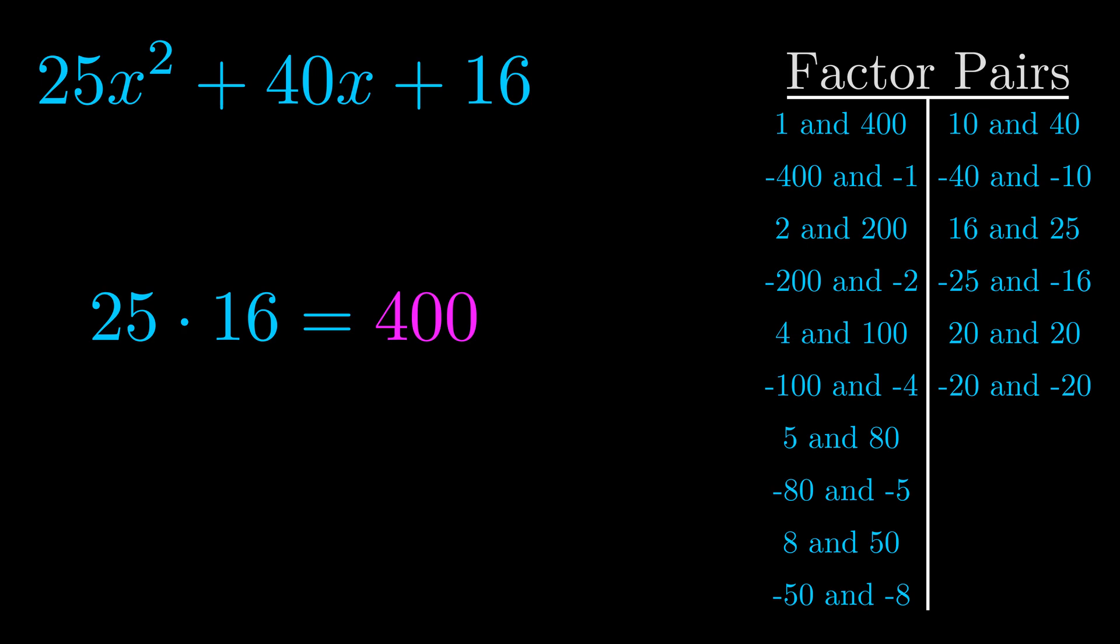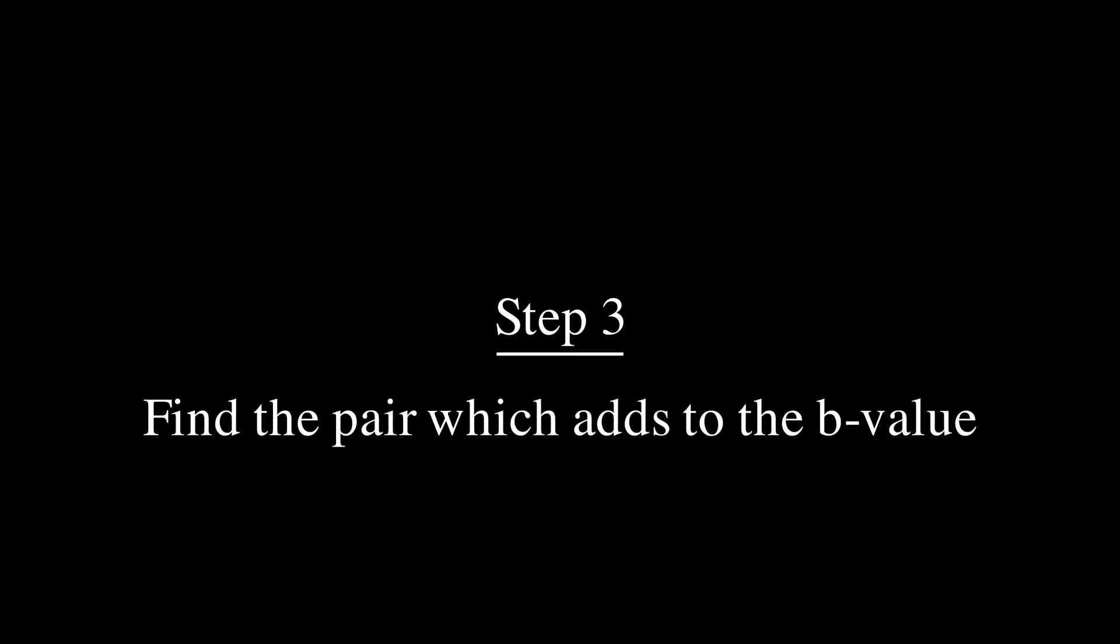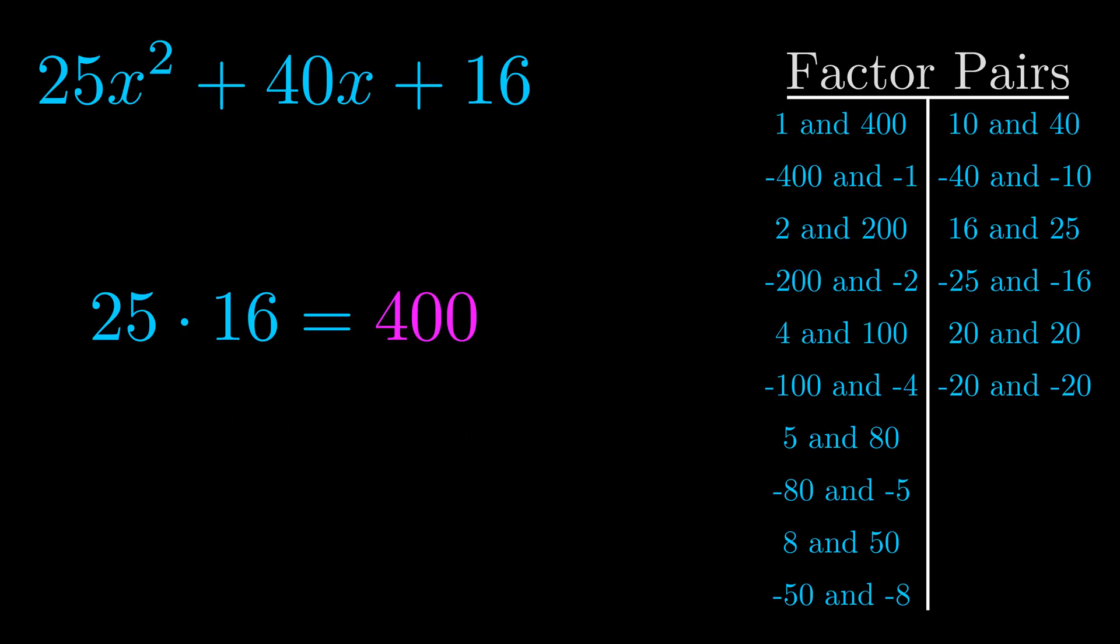Now once you have these factor pairs the goal is to find which of these pairs adds to the b value. The b value is the coefficient on the x term. That's the middle term, the one that we haven't done anything with yet. And really this is the only factor pair that we need.